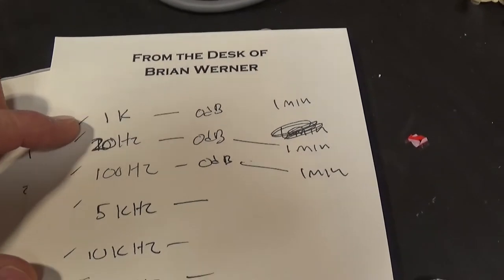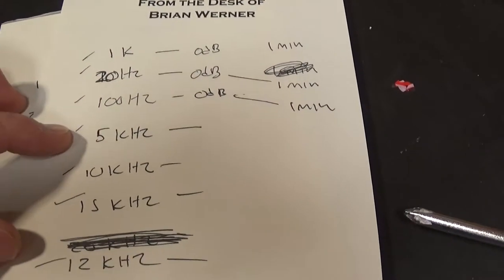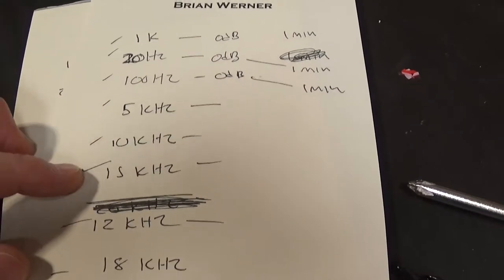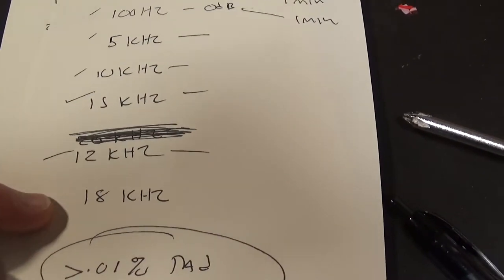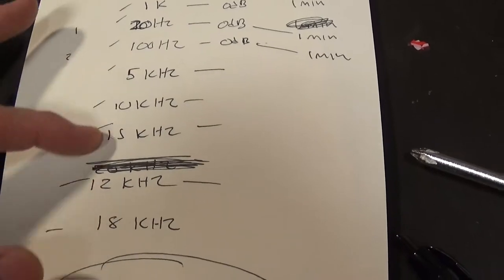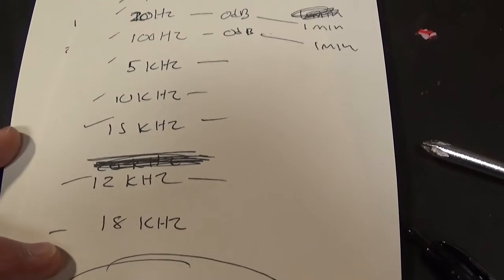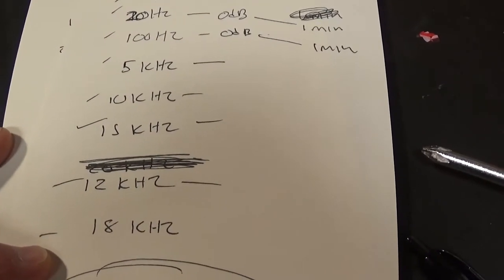And I recorded the following tones. I recorded a 1K, a 20 hertz, a 100 hertz, a 5K, a 10K, a 15K, a 12K, and an 18K. They're kind of out of order here, but that's the order that I recorded them in just out of curiosity to see what the cassette deck would do to them.